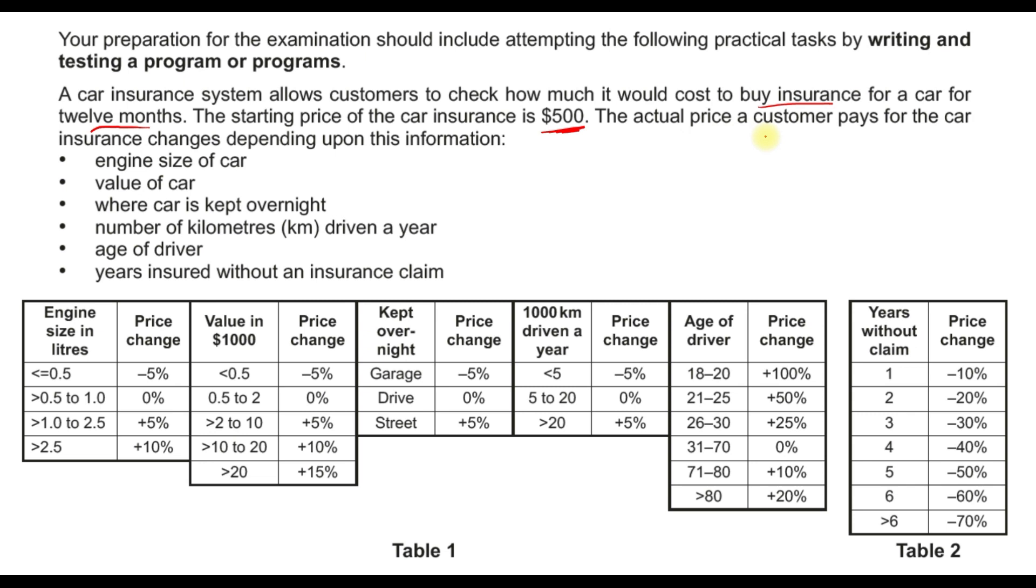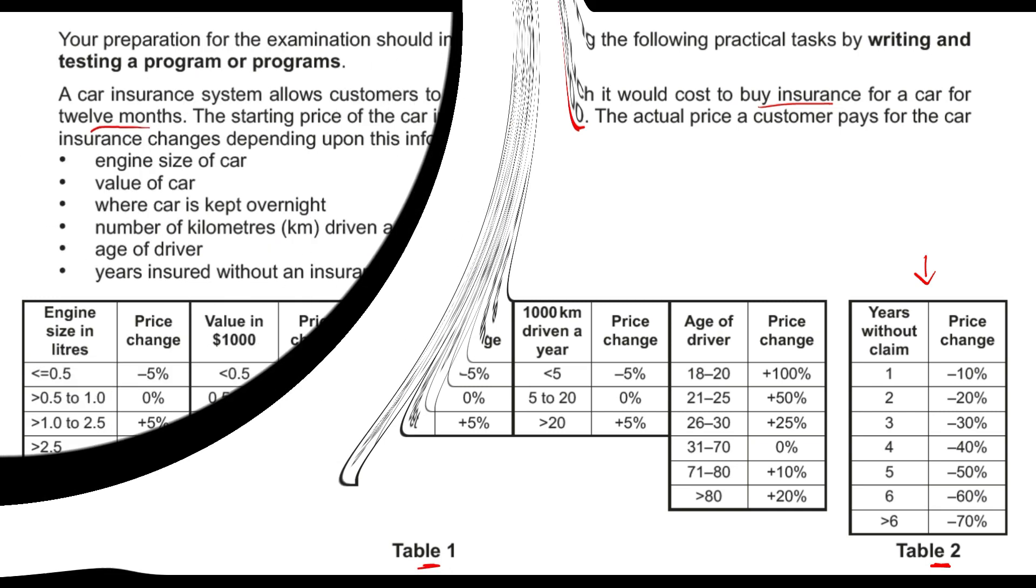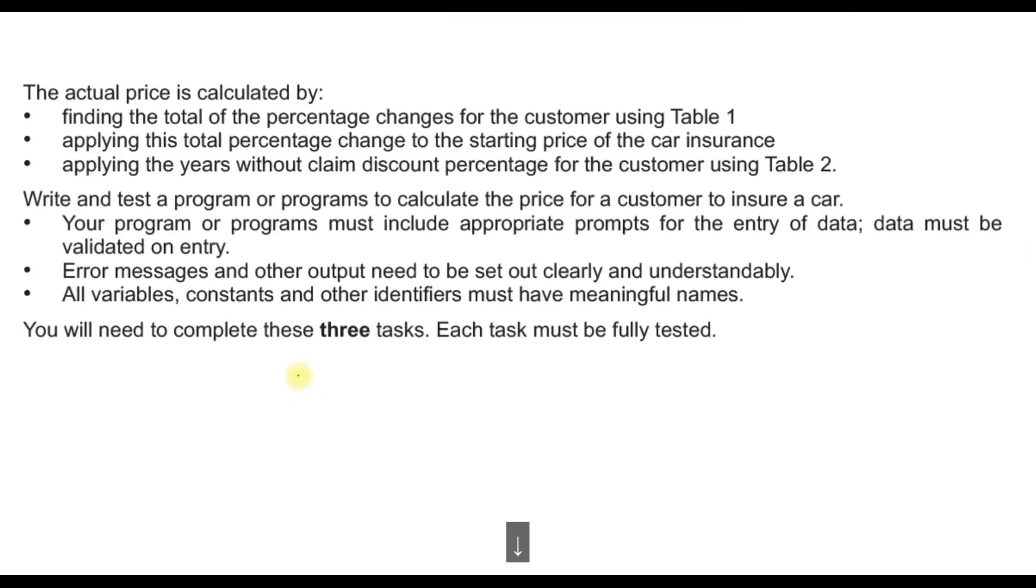So the insurance must start with a basic insurance cost of $500, and then the actual price a customer pays for the car insurance changes depending upon the information provided here: engine size, value of car, where the car is kept overnight, number of kilometers, age of driver, years insured without an insurance claim. All the data are available here in Table 1, and years without claim are available in Table 2.